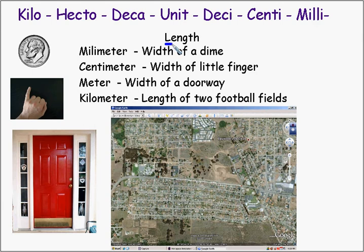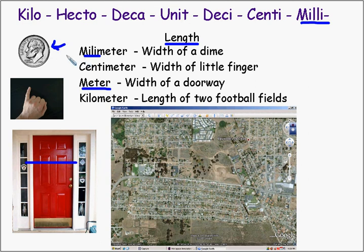Let's talk a little bit about length. The meter is the base measurement, and that's about the width of a doorway. Milla means a thousandth, so if we cut this doorway into a thousand pieces, each piece would be the width of a dime — that's a millimeter. A centimeter is a hundredth of a meter, so if we cut this meter into a hundred pieces, it'd be about the width of your little finger.